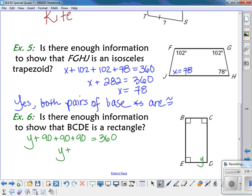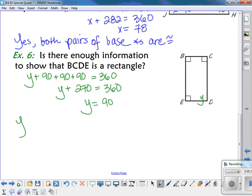Combining my numbers, I get Y plus 270 is equal to 360. Subtract 270 both sides, I get the Y is equal to 90, which means it is also a right angle. Therefore, yes, there is enough information because all four angles are right angles.